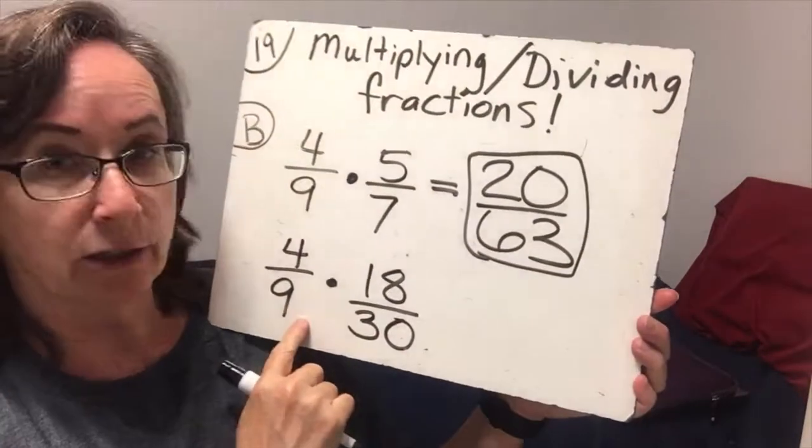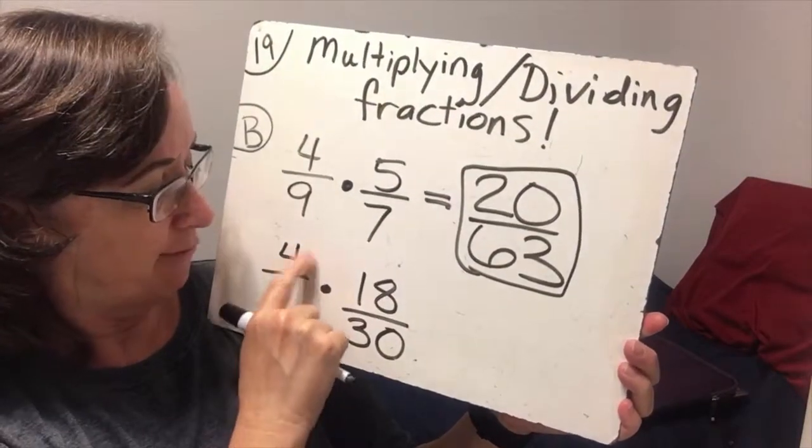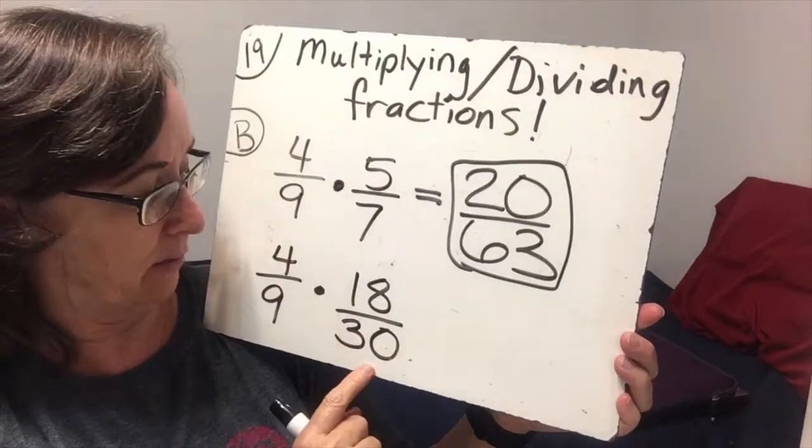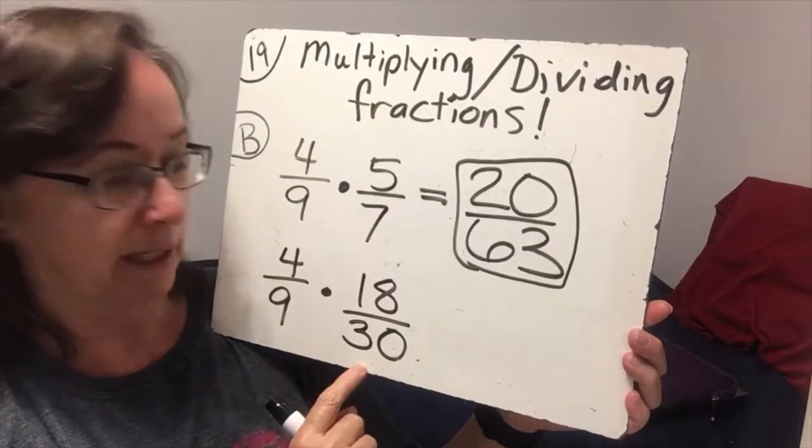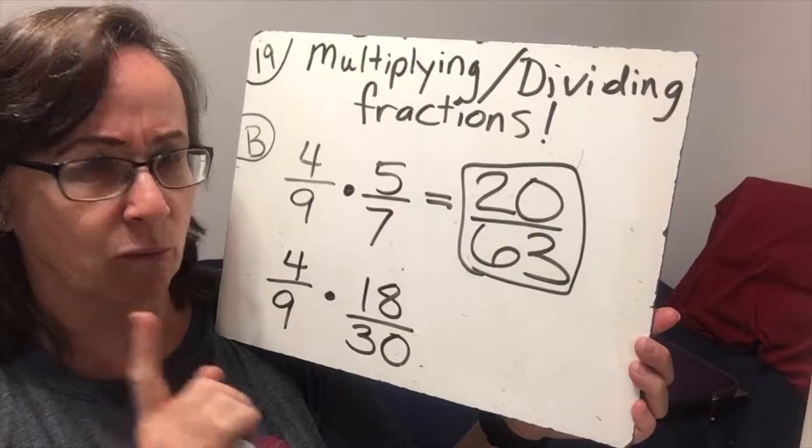So now we're going to look at this one. Now 9 and 4, we can cancel the 4 with either denominator, and we can cancel the 18 with either denominator. So let's do it the easiest way. We can only cancel things once.